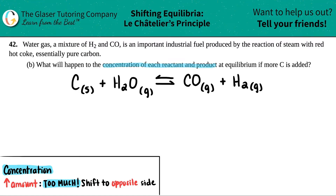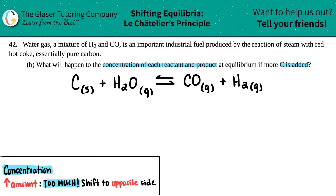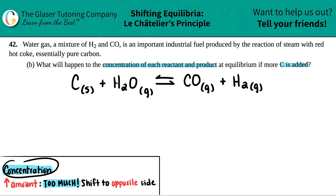Okay, so Le Chatelier's principle — we are messing the system up, we are adding more carbon. Let's see what's going to happen at equilibrium. Now, with Le Chatelier's principle, if you're adding a substance, the concentrations are going to change.